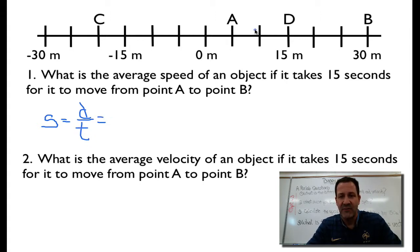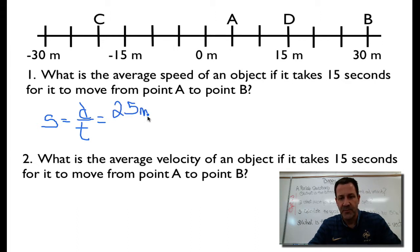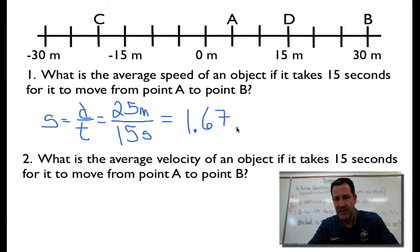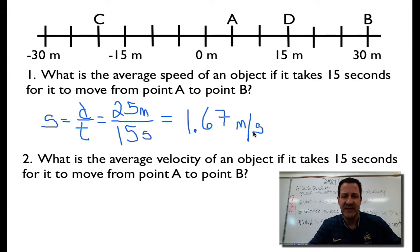The object went from A to B. Each interval is 5 meters, so counting: 5, 10, 15, 20, 25 — the distance is 25 meters. The change in time is 15 seconds. So the speed is 25 divided by 15, which gives us 1.67 meters per second. That is its speed — just how fast it went.